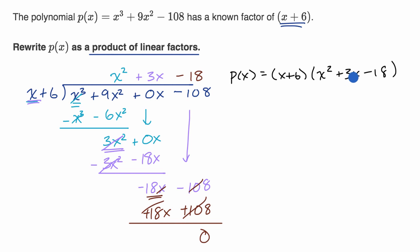And if what I just did seems like voodoo to you, I encourage you to review factoring polynomials. But this I can rewrite, because positive 6 plus -3 is equal to 3, and then positive 6 times -3 is equal to -18. So I can rewrite this as (x + 6) times (x + 6) times (x - 3).